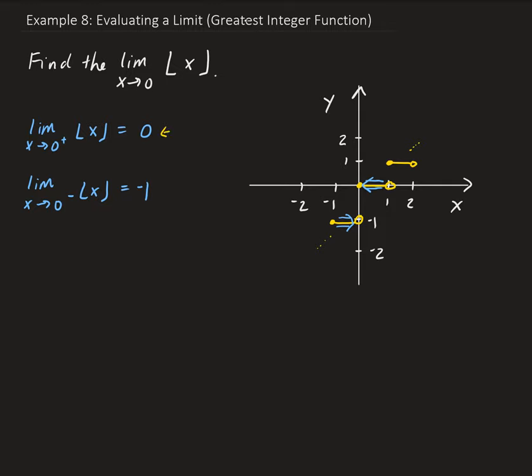So these two limits, the right-hand and left-hand limits are not equal. So therefore, this limit, the limit as x approaches 0 for this greatest integer function does not exist.